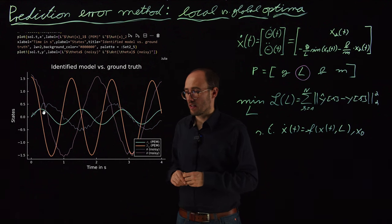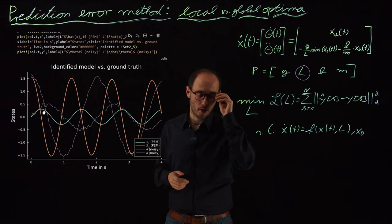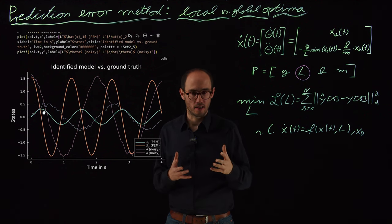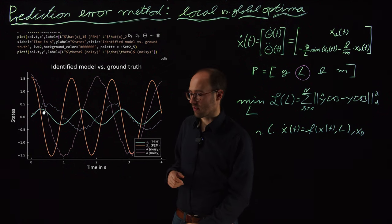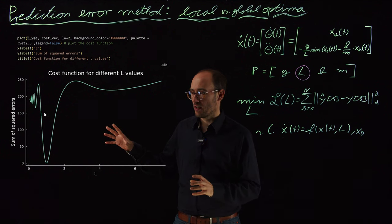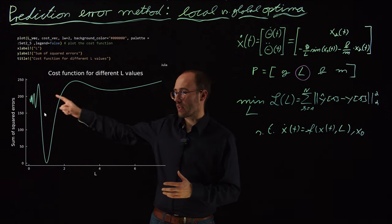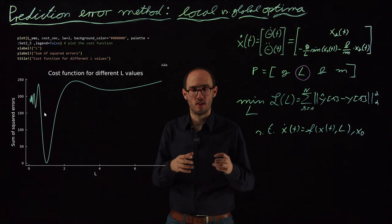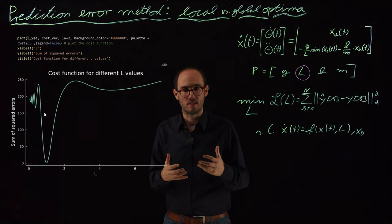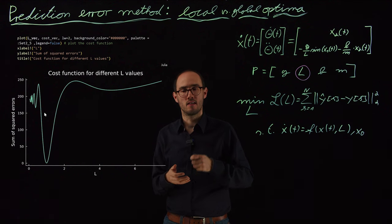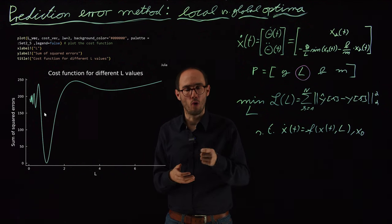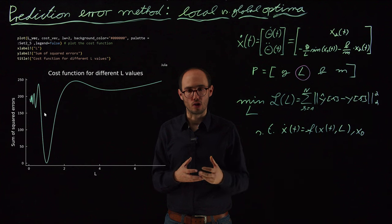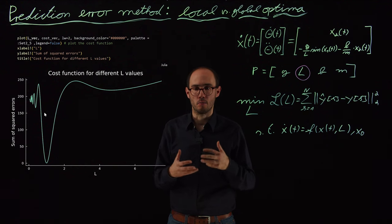So how can we try to compensate for this problem, especially if we have high dimensional problems? One approach could be multi-starting. Multi-starting would basically mean that we do a couple of initial guesses, not only at 0.5 meter here, but maybe also at 2 meter, 4 meter, 6 meter and so on. We basically do a set of initial conditions of L and then start gradient descent based solvers for all these different initial guesses and hope that at least one of those initial guesses was sufficiently close to the global optimum.